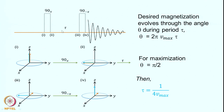The pulse sequence for the jump and return experiment is: first, a 90-degree pulse applied along the x-axis; then wait for a time tau; then apply another 90-degree pulse with the opposite phase along the minus x-axis; following that, detect your FID and Fourier transform it to get your spectrum.